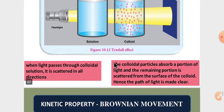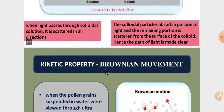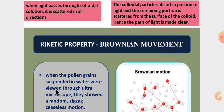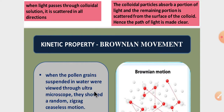Next, we look at the kinetic property. Kinetic property — listen carefully. The scientist Robert Brown discovered this. Robert Brown observed pollen grains suspended in water. When viewed under a microscope, the particles move in a ceaseless random zigzag motion. That is how colloidal particles move.